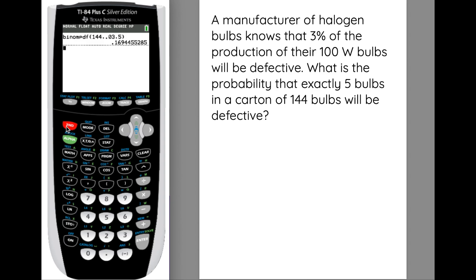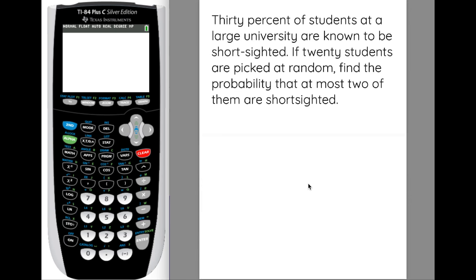Alright, so let's try another one. Thirty percent of students at a large university are known to be short-sighted. If twenty students are picked at random, find the probability that at most two of them are short-sighted. So the word at most should be a clue to you that this is actually a range of values, and so this one we're going to be using binomial CDF.